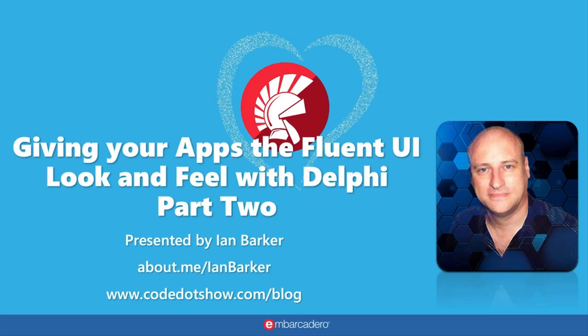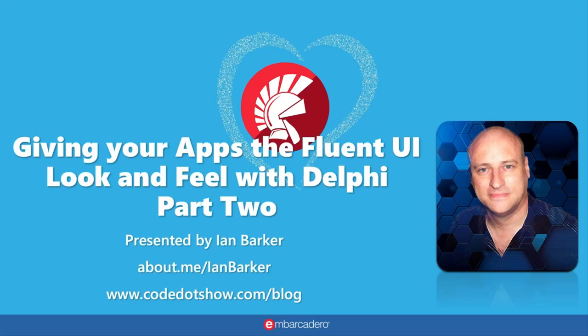My name, as you can see on the screen, is Ian Barker, and I'm an Embarcadero MVP — Delphi MVP. You can get to me at about.me/IanBarker, or at my blog, which is www.codeshowing.com/blog.